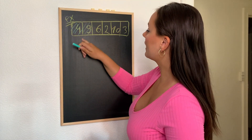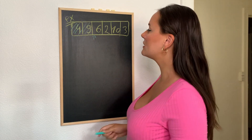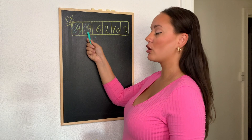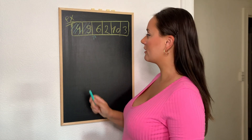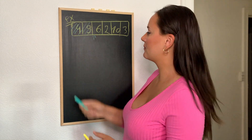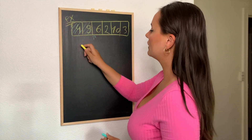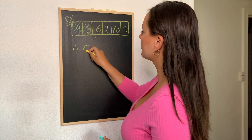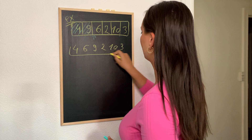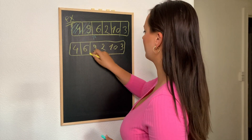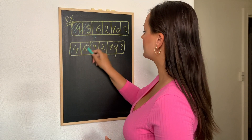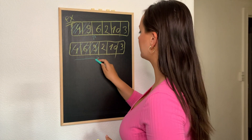Now we move our current element to 6. We take a look at 6 and compare it to the elements on its left. 6 is smaller than 9 but bigger than 4, which tells us we need to swap 6 with 9. Our array will now look like this: 4, 6, 9, 2, 10, and 3. So our sorted array now has 3 elements.